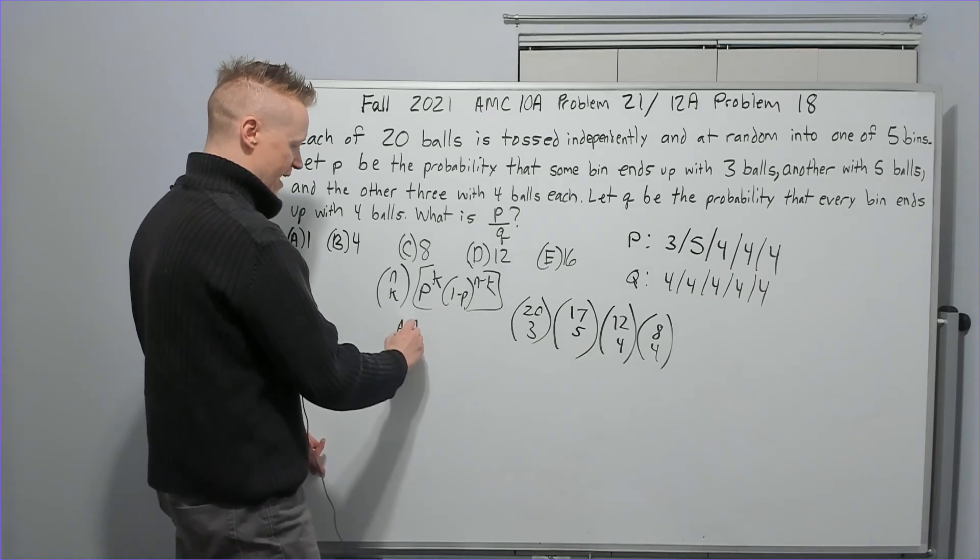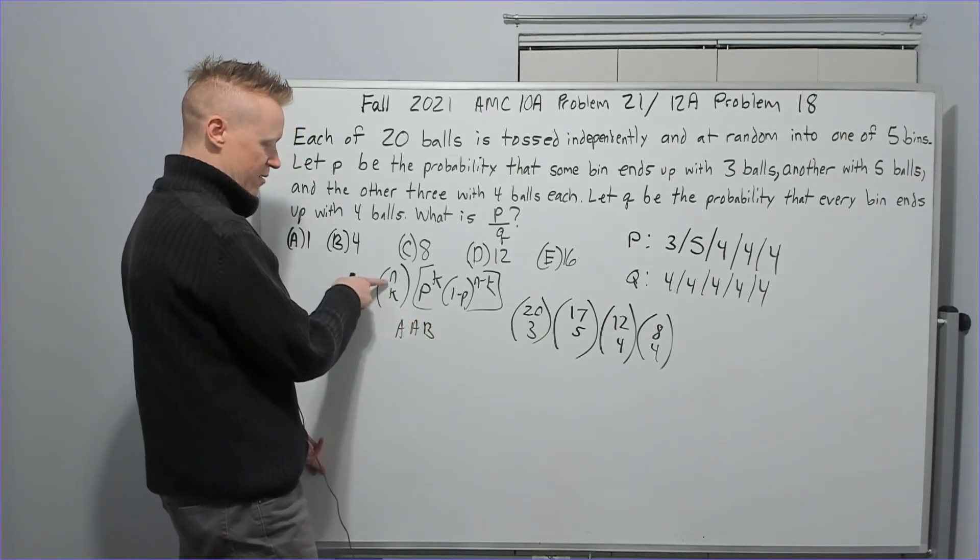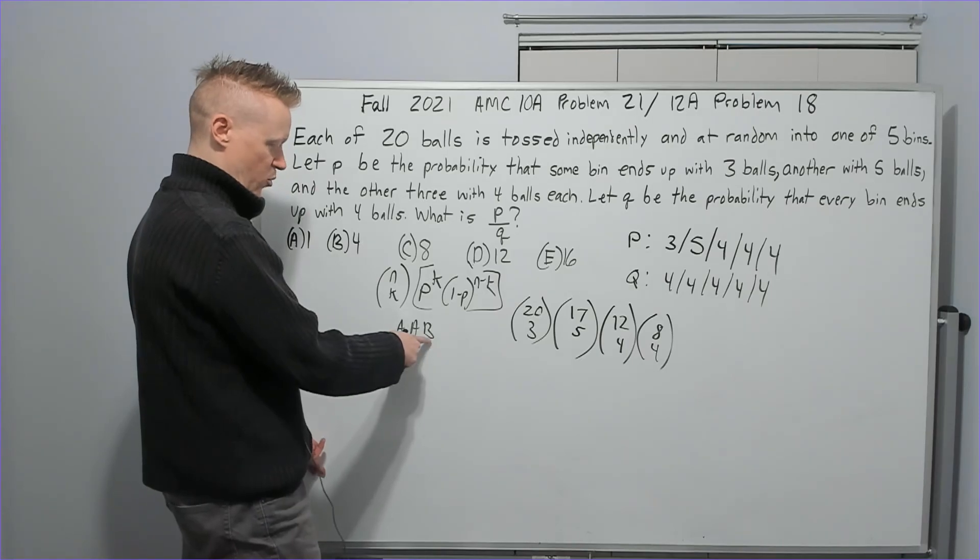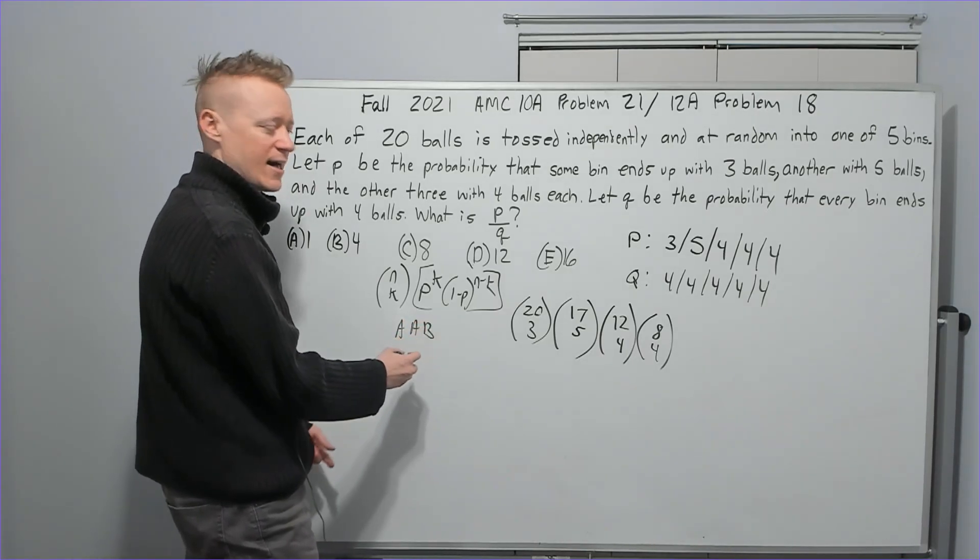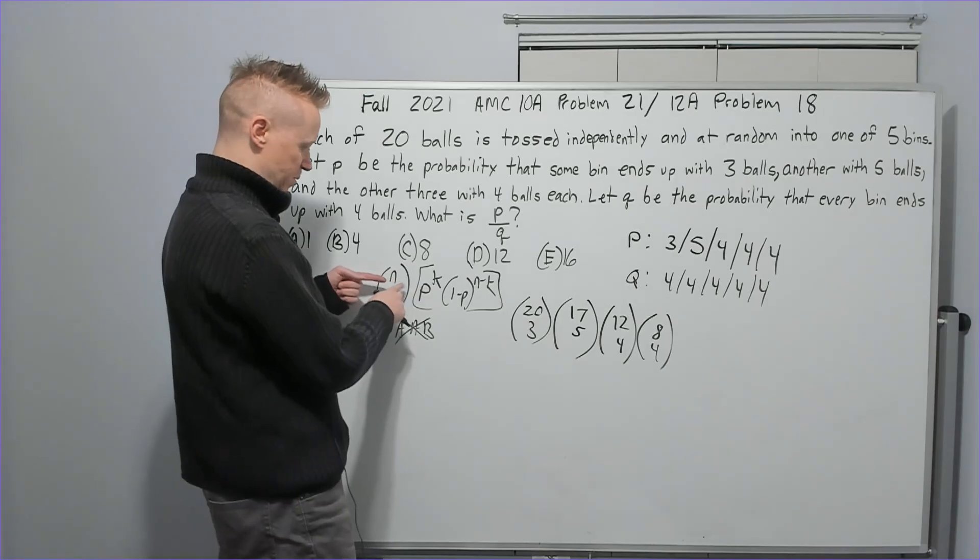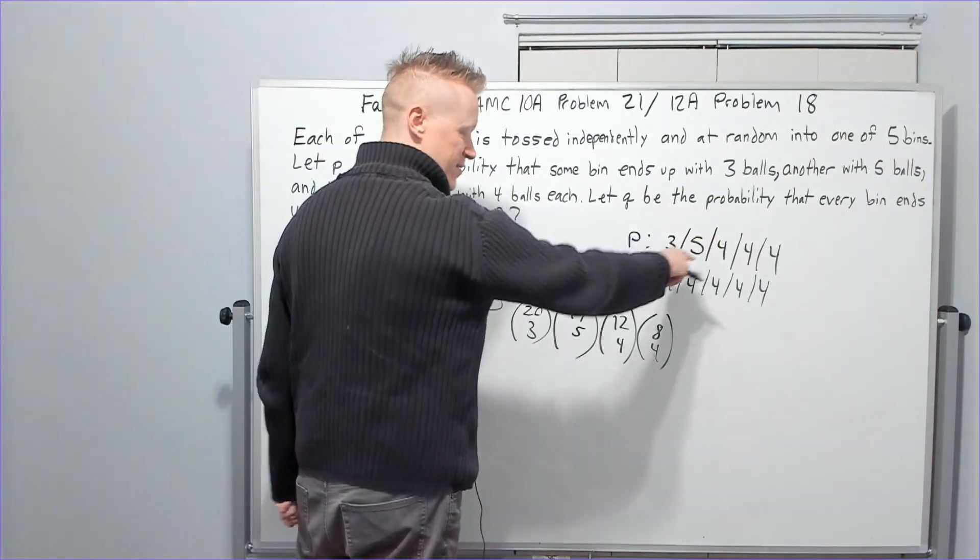So for example, if it went AAB, N choose K would be like 3 choose 1, where to place the B or something like that. Okay. So that we need to account for this part here where we say how many ways can we arrange those.